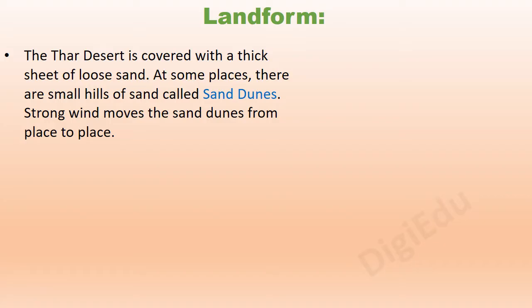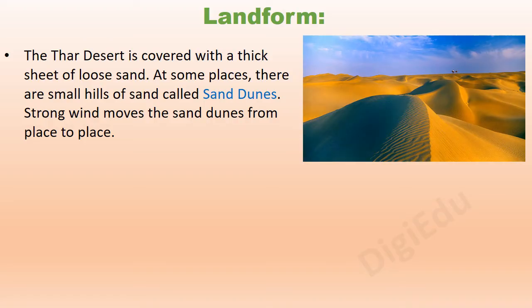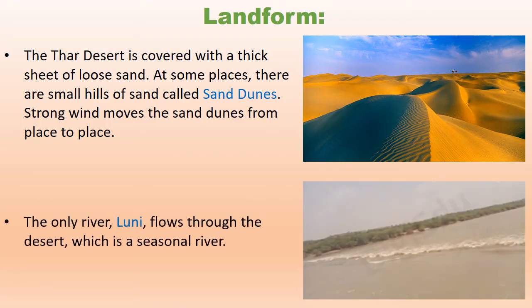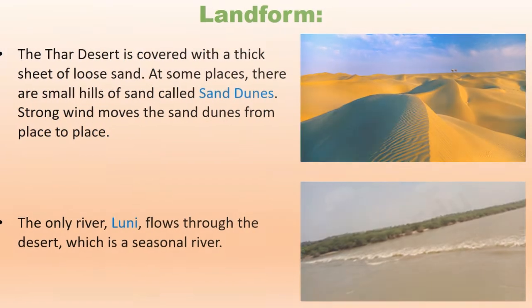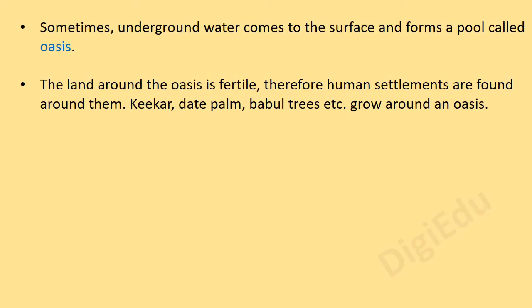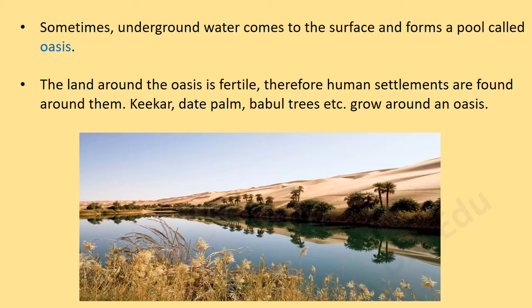Landform: The desert is covered with a thick sheet of loose sand. At some places there are small hills of sand called sand dunes. Strong wind moves the sand dunes from place to place. The only river, Luni, flows through the desert and is a seasonal river. Sometimes underground water comes to the surface and forms a pool called an oasis. The land around the oasis is fertile, and therefore human settlements are found around them.